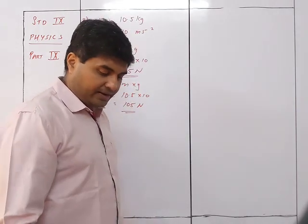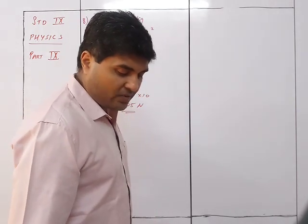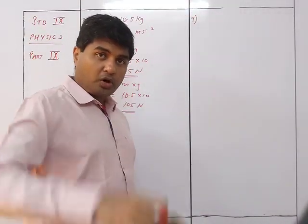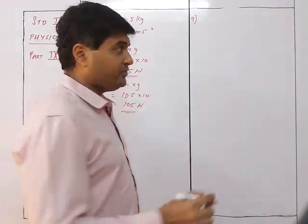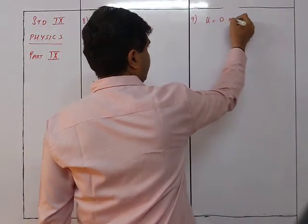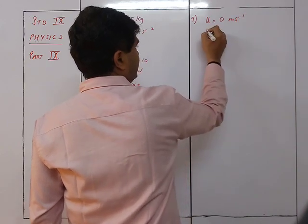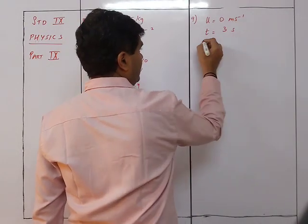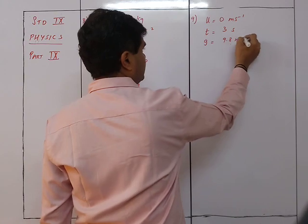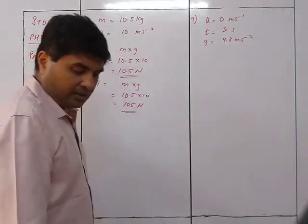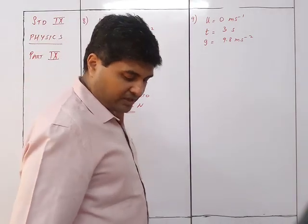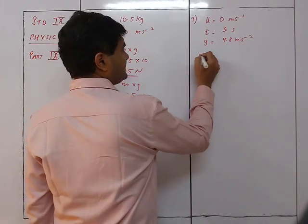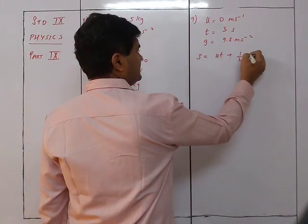Question 9: A ball is released from a height and reaches the ground in 3 seconds. Given u = 0 m/s, t = 3 s, g = 9.8 m/s². Find the height and the velocity when the ball strikes the ground. For height: s = ut + ½gt².